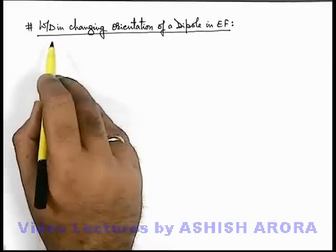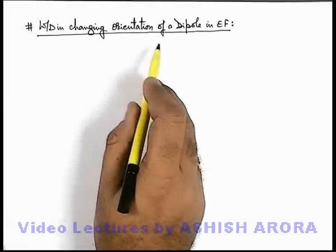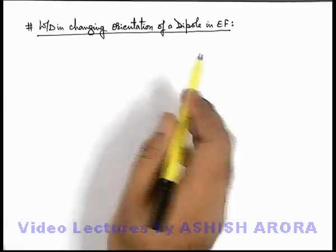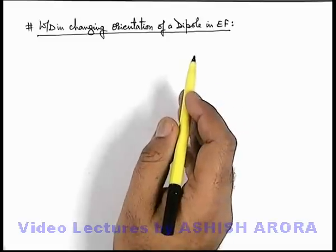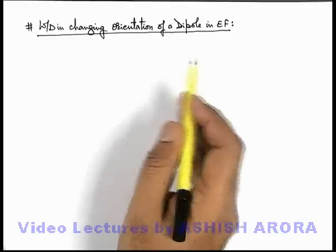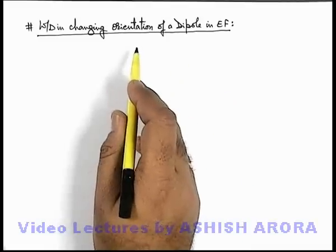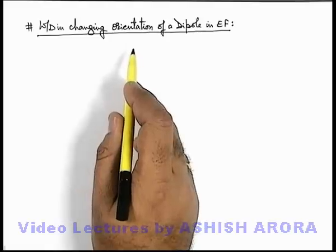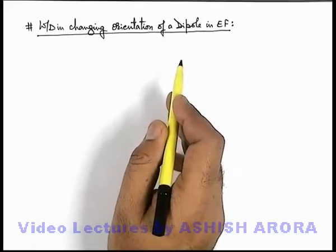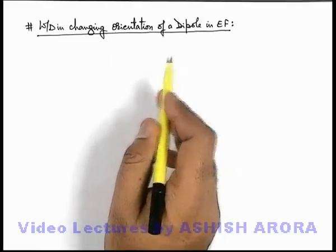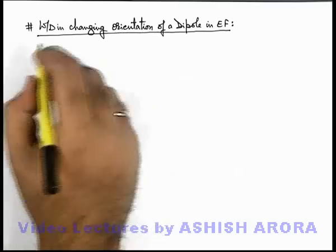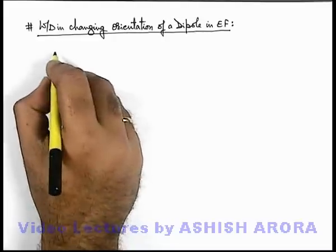Let's analyze the work done in changing the orientation of a dipole in an electric field. We know that electric field is a conservative field. In a conservative force field, whenever we change the orientation of a charge system, the work done does not depend on the way how we are changing it — it only depends on the initial and final position. Here also we analyze in a similar manner.